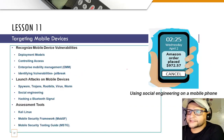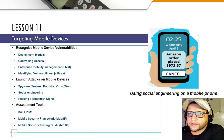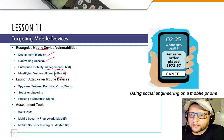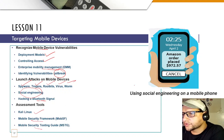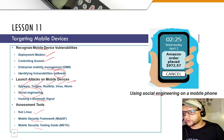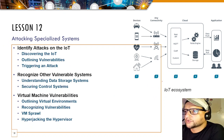Lesson 11 covers targeting mobile devices — recognizing mobile device vulnerabilities, understanding deployment models, controlling access, using EMM, identifying vulnerabilities, jail breaking or rooting devices, and launching attacks using spyware, trojans, rootkits, viruses, worms, and social engineering on mobiles. You'll also learn how to hack Bluetooth signals, and use Kali Linux, the Mobile Security Framework, and the Mobile Security Testing Guide.